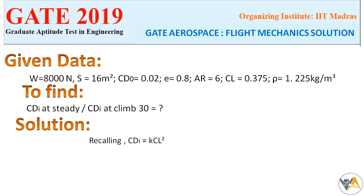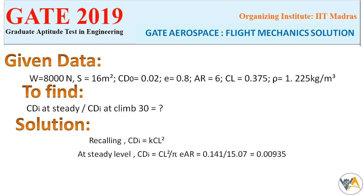Recalling the induced drag coefficient formula: CDi = K × CL², where K = 1/(π × e × AR). At steady level conditions, CL = 0.375, so CL² = 0.141. Substituting the value of e × AR into π gives 15.07, and the induced drag at steady level flight is CDi = 0.00935.